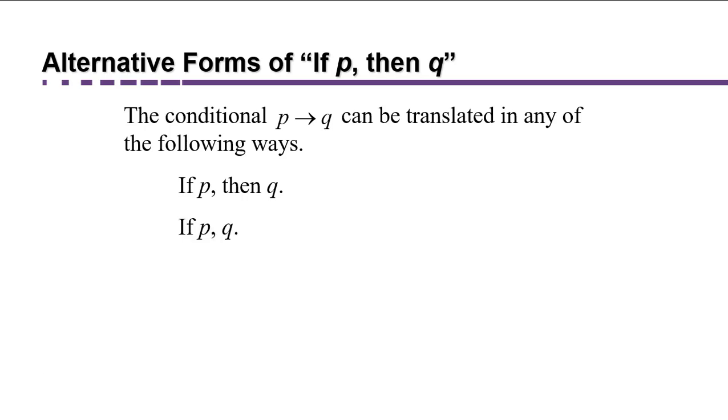For example, we might say if P Q without putting the word then in there, it's implied. Or we might say P implies Q. Also we might say P happens only if Q happens. Or we might say P is sufficient to cause Q to happen.